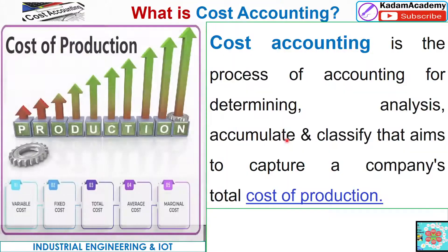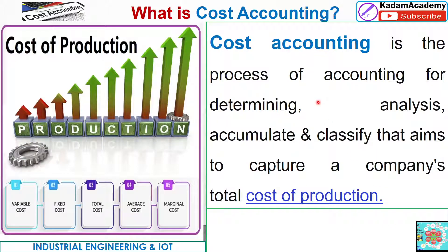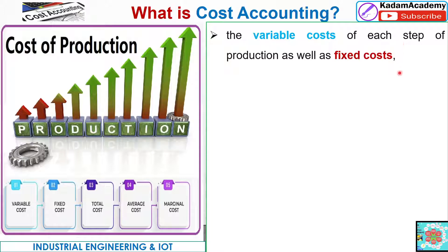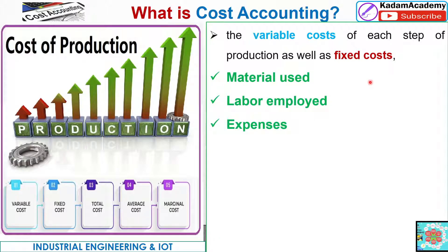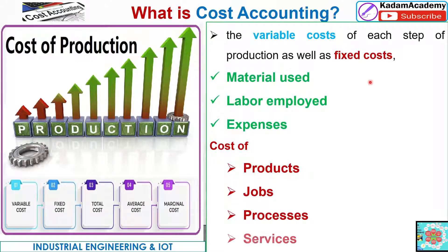Now we will see cost accounting. Cost accounting is defined as the process of accounting for determining, analyzing, accumulating, and classifying costs that aims to capture a company's total cost of production. When we manufacture any product, the total cost of production is determined using a particular method, and statements are prepared through cost accounting. Variable costs and fixed costs are related to material, labor employed, or expenses and overheads — related to products, jobs, processes, or service industries.